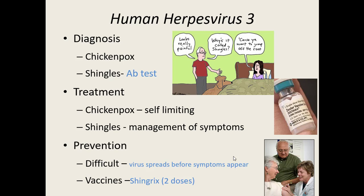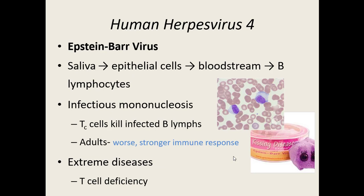The next human herpes virus is HHV-4, also known as the Epstein-Barr virus. It's spread or transmitted via saliva. It then spreads to epithelial cells, into the bloodstream, and it targets your B lymphocytes — your B cells. It causes a condition more commonly known as infectious mononucleosis, which we usually shorten to mono.